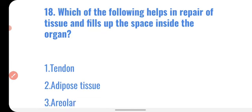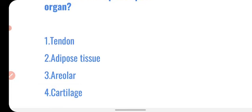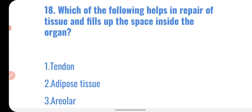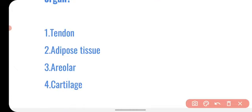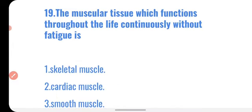Question eighteen: which one of the following helps in the repair of tissue and fills up the space inside the organ? Options are tendons, adipose tissue, areolar tissue, and cartilage. Areolar tissue helps in the repair of tissue and fills up the space inside organs. So the correct option is areolar tissue.